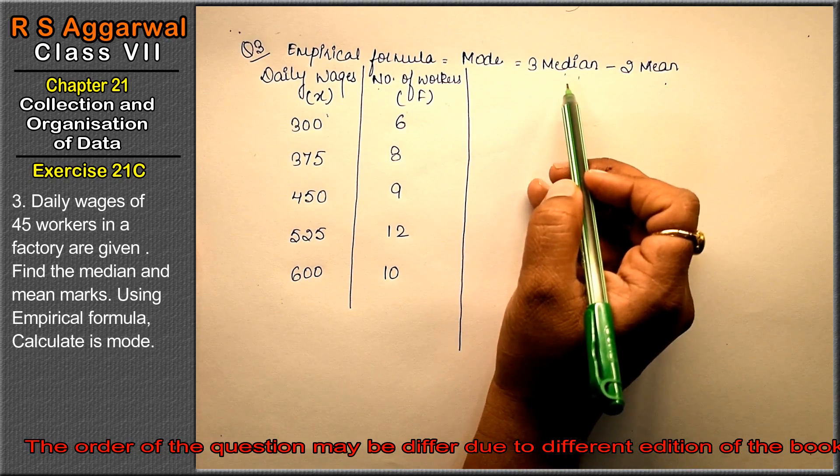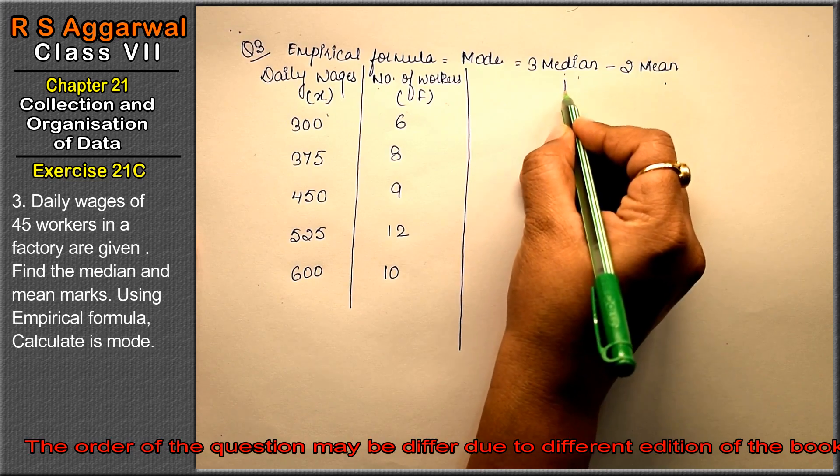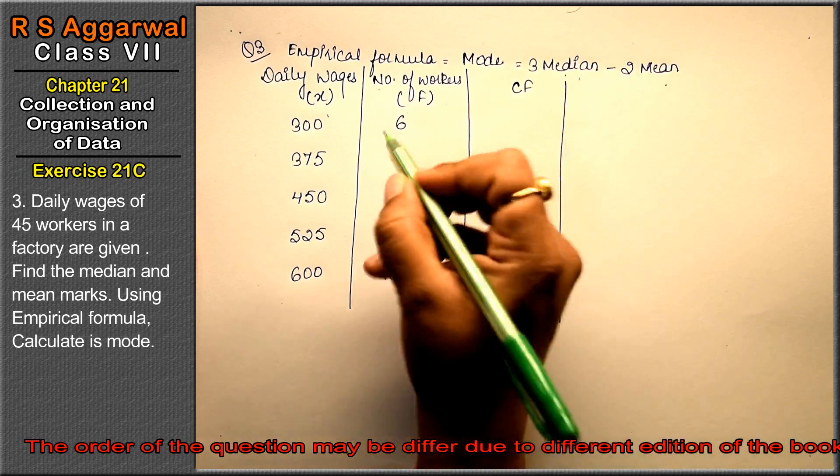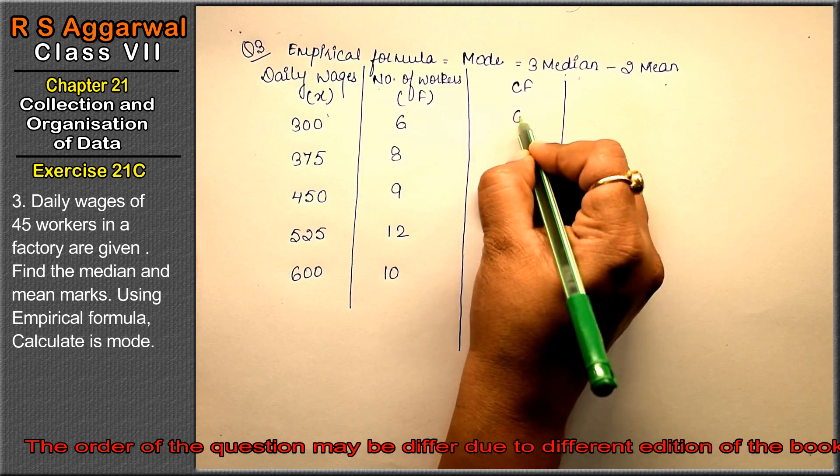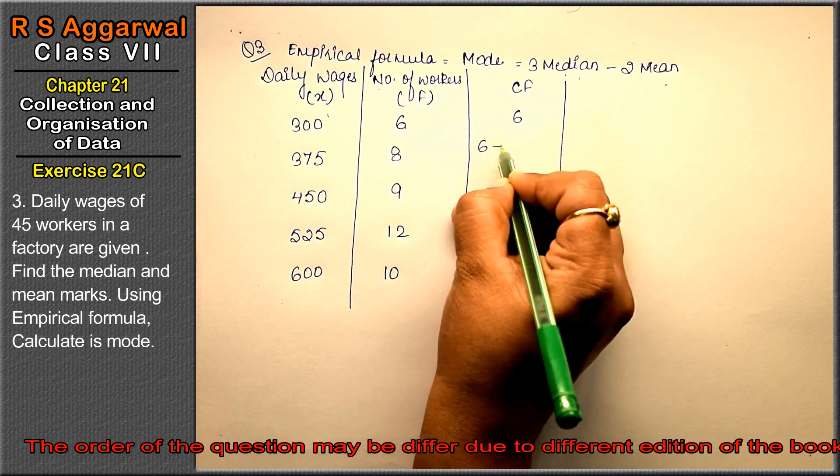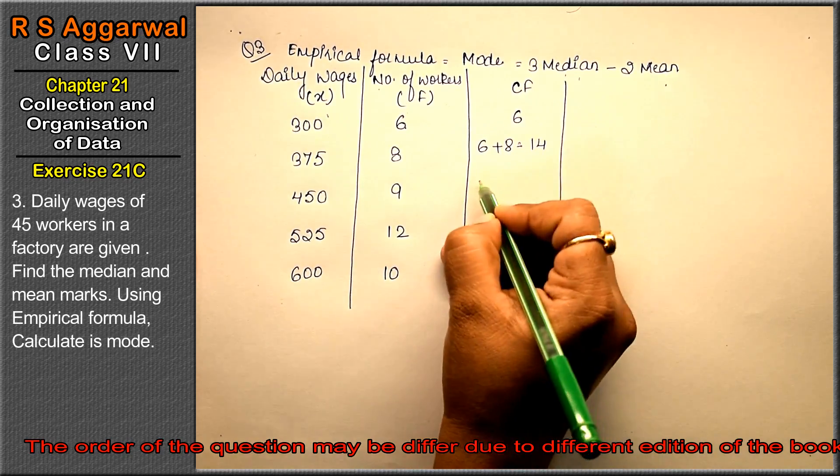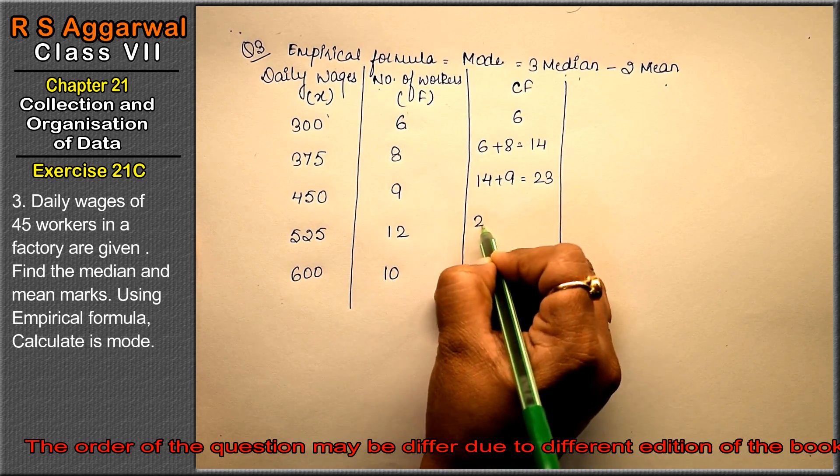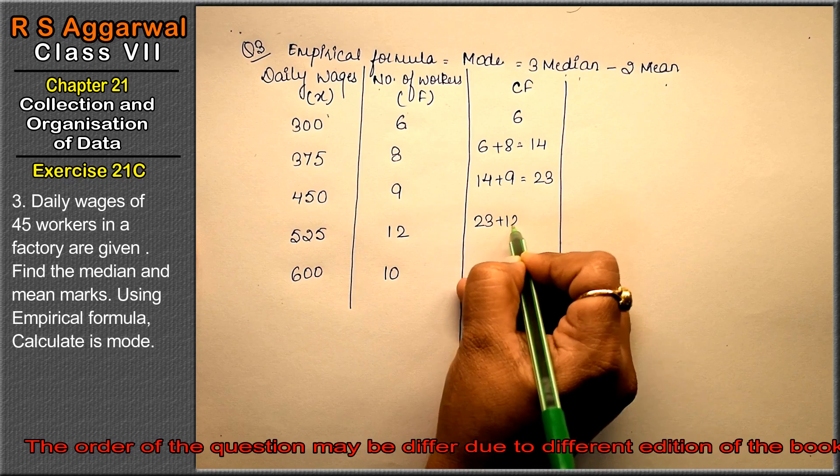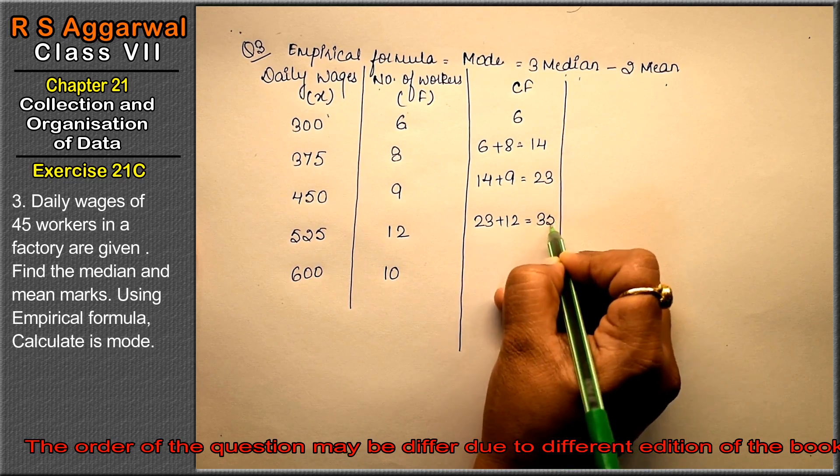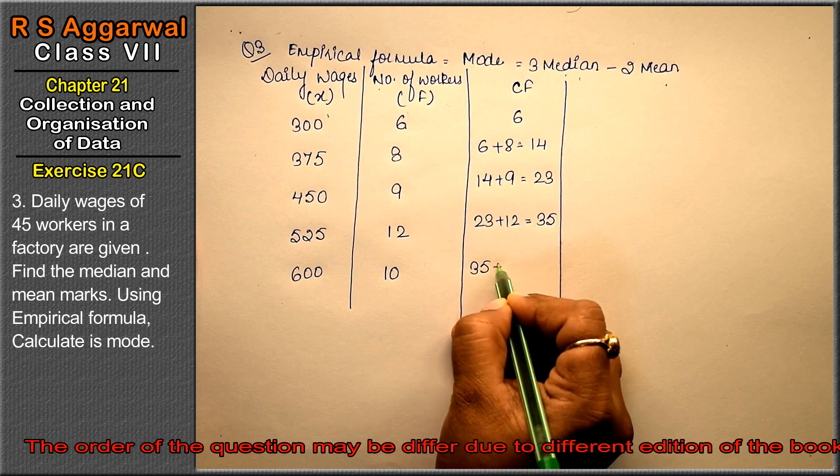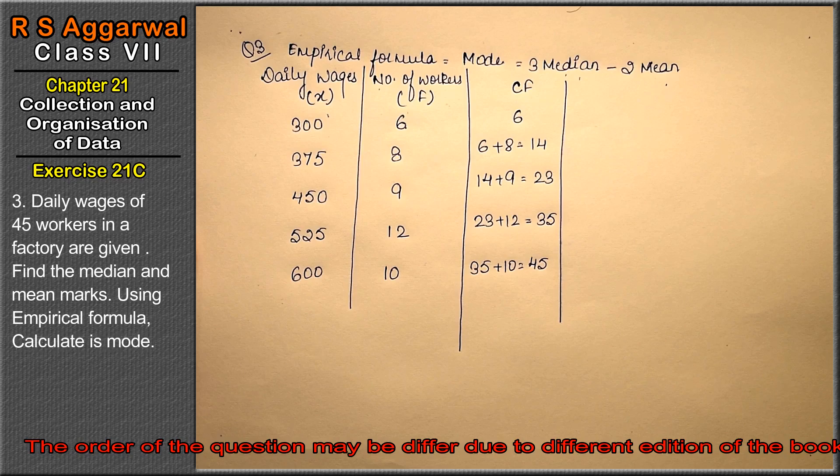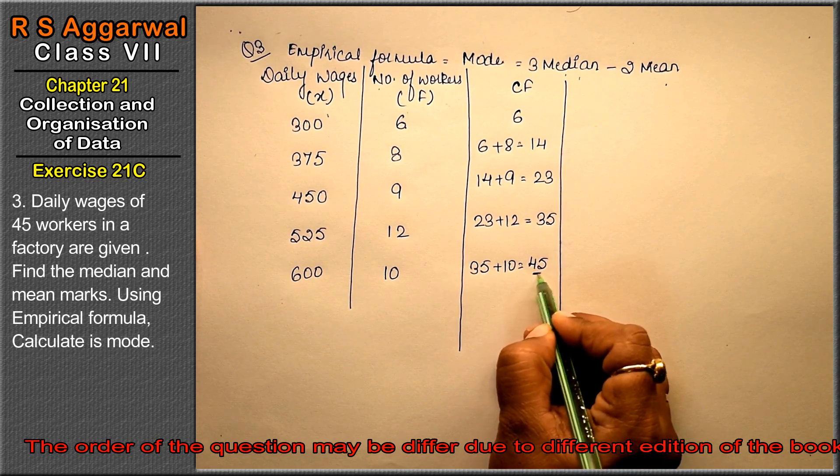Now to find the median, we need cumulative frequency. Cumulative frequency: first value as it is, then keep adding. 6 plus 8 equals 14, 14 plus 9 equals 23, 23 plus 12 equals 35, and 35 plus 10 equals 45.